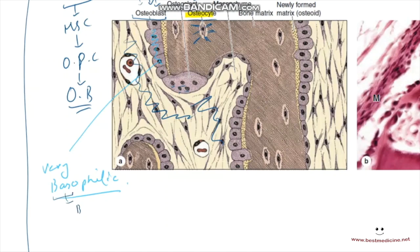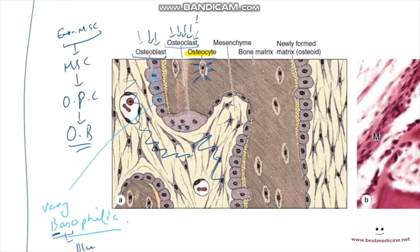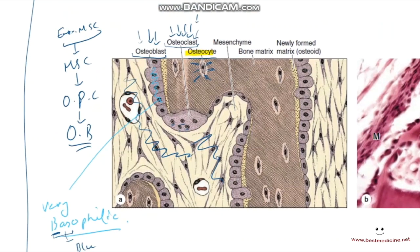Remember: basophilic substances stain blue — B for basophilic, B for blue — on an H&E dye, as compared to eosinophilic substances that stain pinkish or reddish. So osteoblasts form a simple cuboidal layer of densely stained, very basophilic cells present in both the periosteum and endosteum.